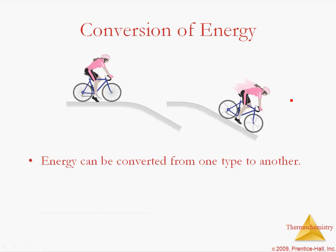The cool thing about energy is that you can switch energy back and forth between work and heat. You can go from a high potential energy and zero kinetic energy to a lower potential energy and a higher kinetic energy. If you're on top of a mountain, you've got high potential energy and no kinetic energy. You jump off and base jump, you're turning your potential energy into kinetic energy. Energy is interconvertible.